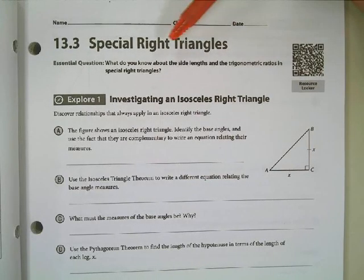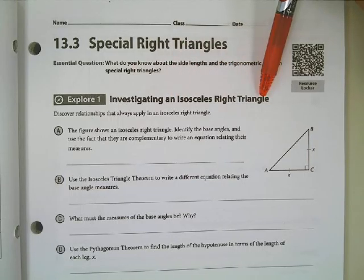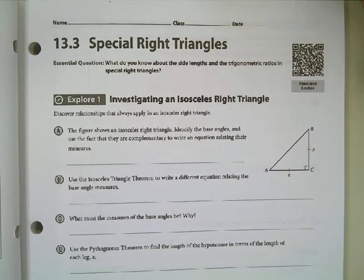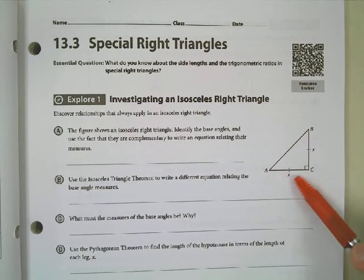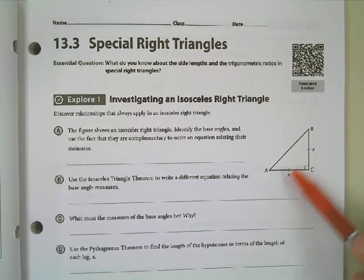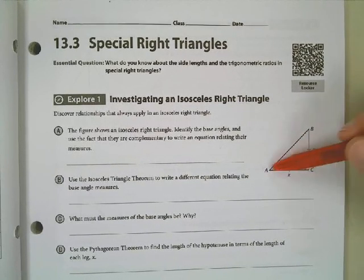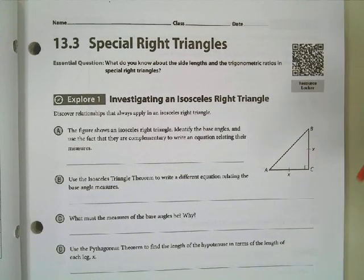We're going to look at an isosceles right triangle. What makes a triangle isosceles? Two congruent sides. We've got a picture of an isosceles triangle with two congruent sides, and we've labeled both those congruent sides X. Since it's isosceles, if this side is X, this side will also be X.